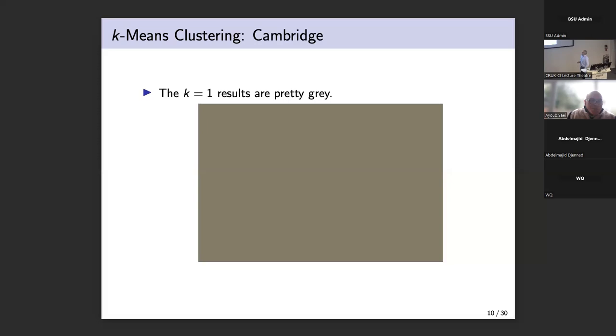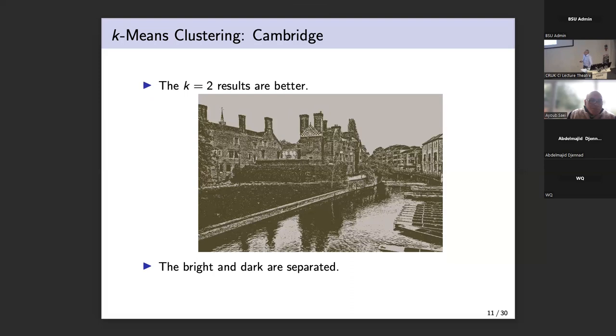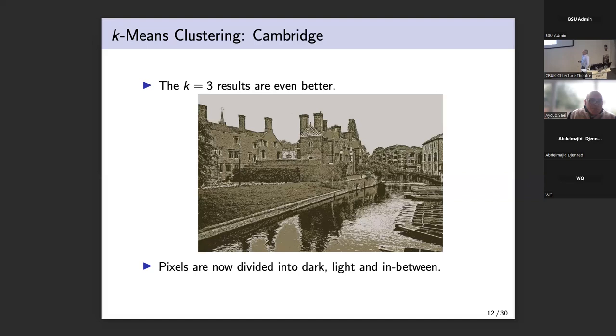As soon as we start clustering the pixels into more than one cluster, we actually start to see some interesting structure. So when we do a two cluster solution, we actually just get dark and light pixels. And it's actually not a bad picture even at that stage. So we've replaced the 700,000 unique values with just two values. When we go to three, it's actually kind of looking even better. We have dark, light and somewhere in between. And it kind of even looks like an old fashioned kind of photo you might find sometimes in a bookshop or something as a postcard.